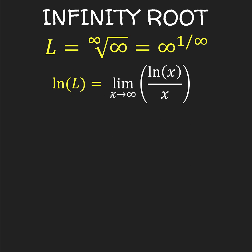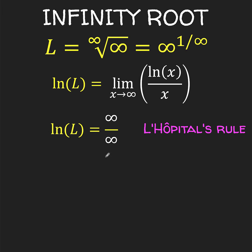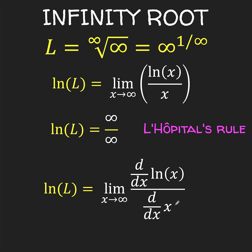Let's simplify this further. Evaluating the limit of ln of x over x as x approaches infinity, we have ln of infinity over infinity, which is an indeterminate form. This is a form that enables us to use L'Hôpital's rule. According to this rule, when the result is an indeterminate form infinity over infinity, we can find the limit by taking the limit of the derivative of the expression, arriving at this new form — the derivative of the numerator divided by the derivative of the denominator.